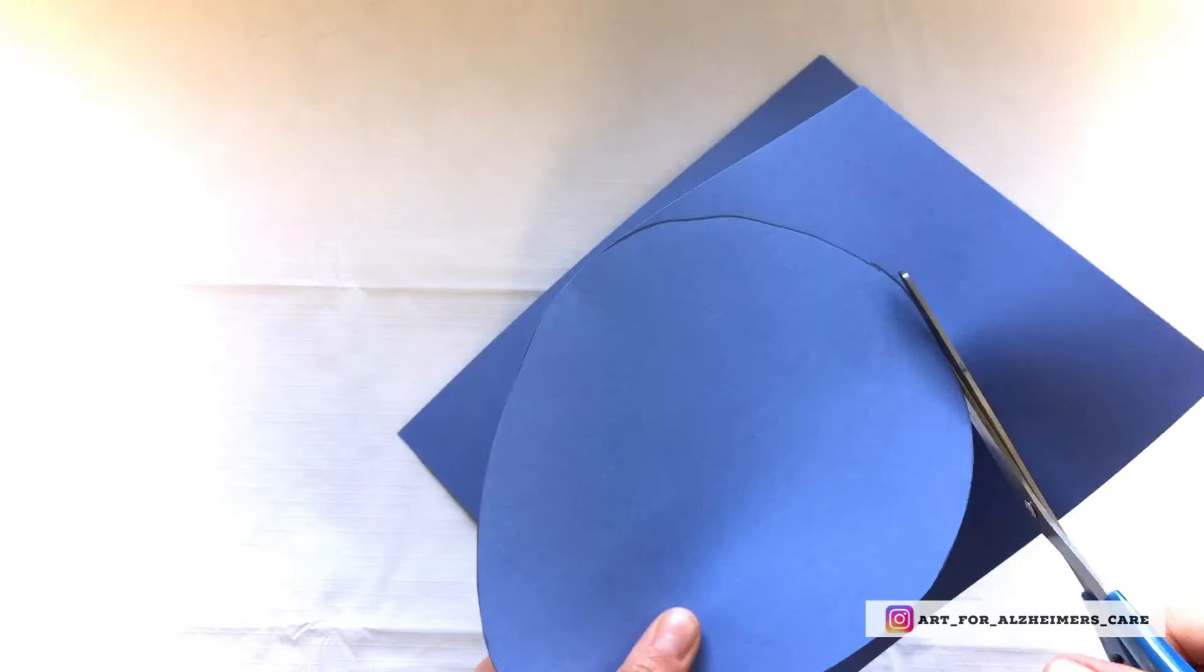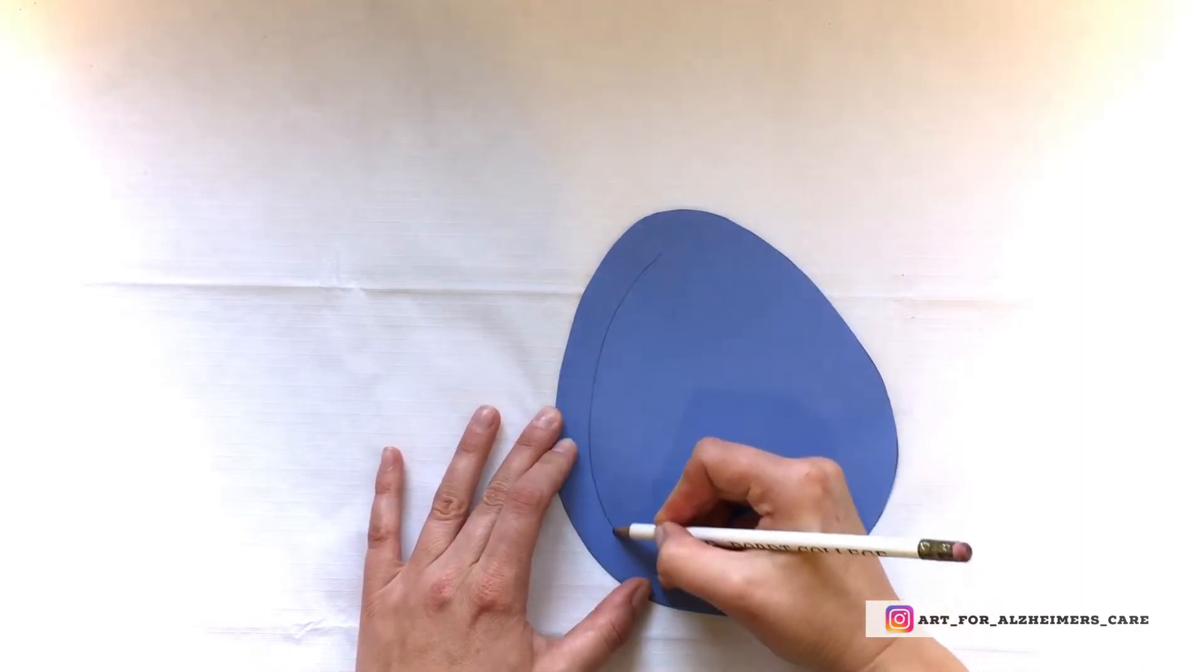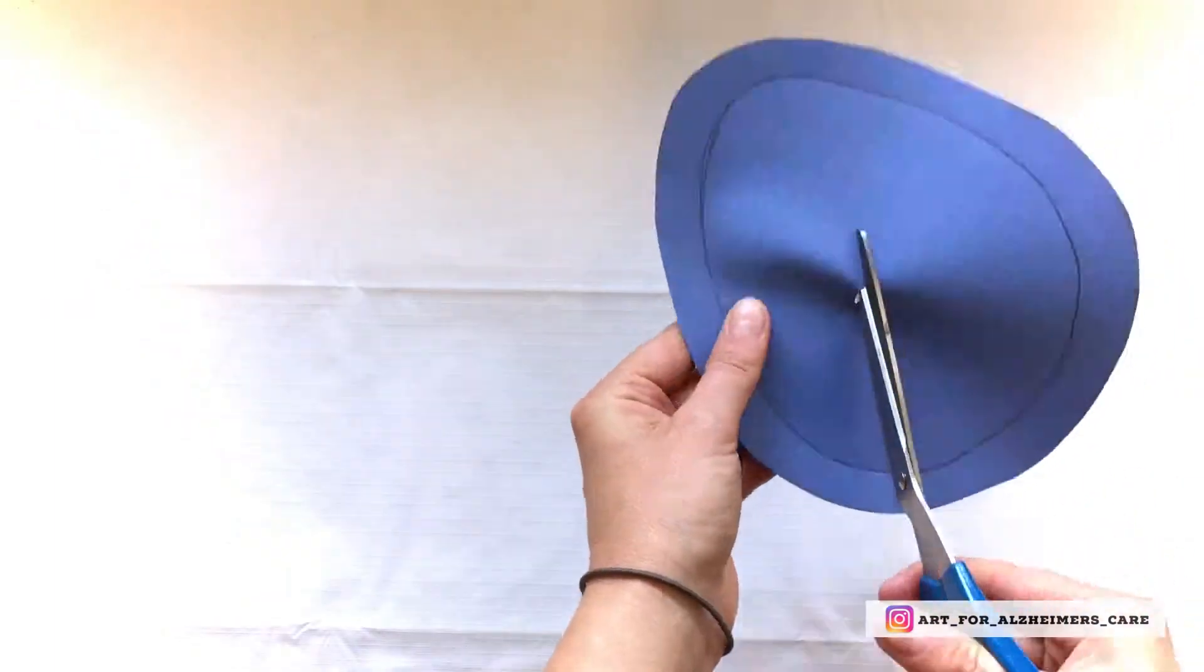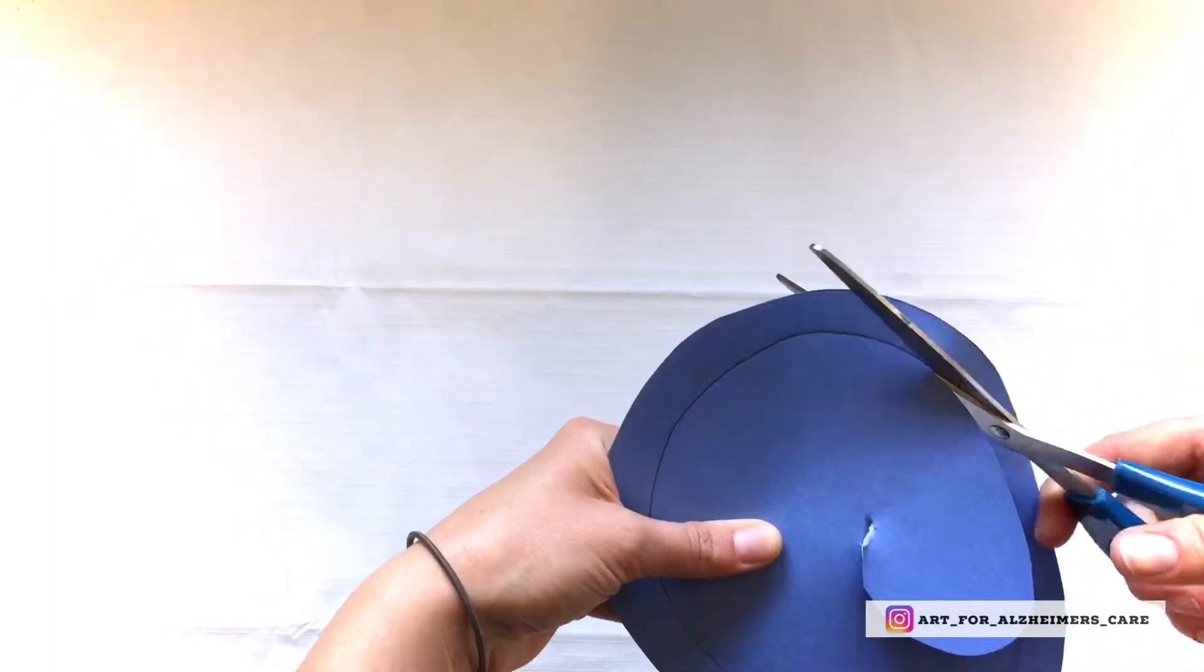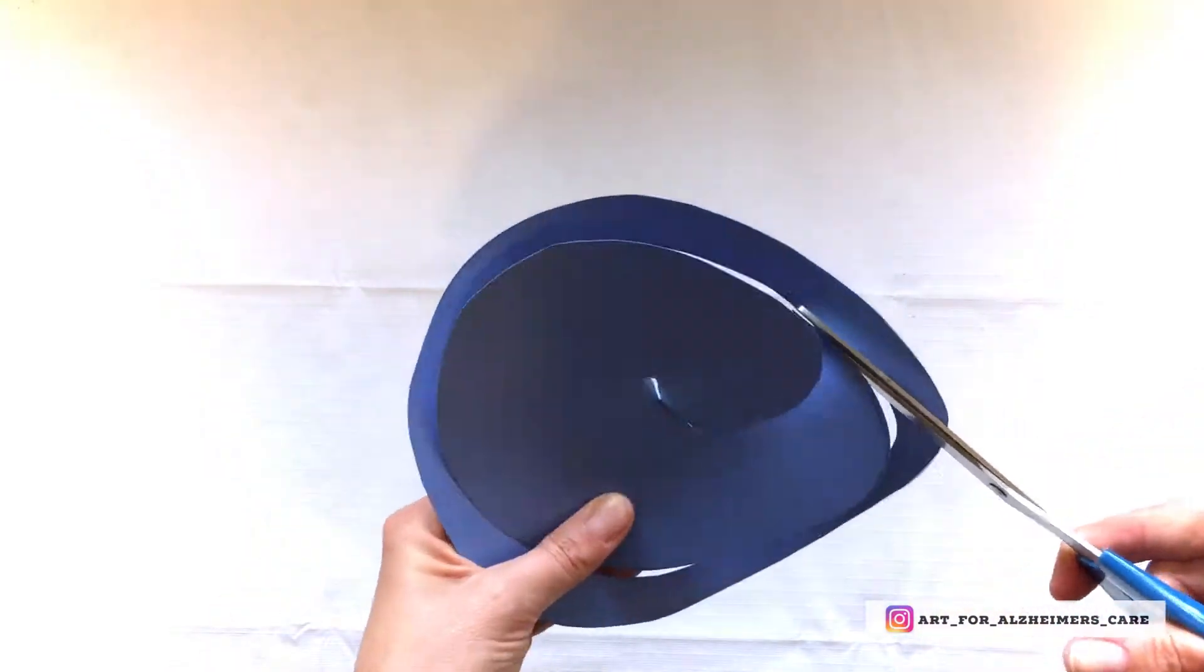And then you can go ahead and cut that out. Then you're going to use your pencil again to follow the outside edge and draw another egg on the inside and cut that out. And then that will be your border for your project.